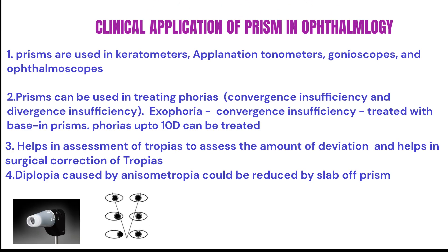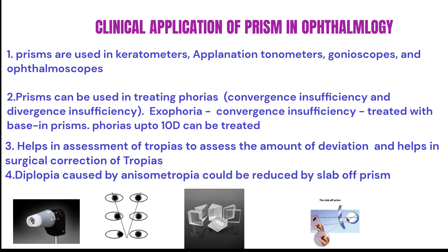Clinical Applications of Prisms: Prisms are used for diagnostic purposes, including in keratometers, applanation tonometers, gonioscopes, and ophthalmoscopes. Prisms can be used in treating phorias such as convergence insufficiency and divergence insufficiency. Exophoria, seen in convergence insufficiency, is treated with base out prisms. Esophoria, seen in divergence insufficiency, is treated with base in prisms. Phorias can be treated up to 10 prism diopters; beyond that, surgical correction is indicated. Prisms are also used in measurement of tropias and for assessing primary and secondary deviation. In incomitant strabismus, prisms are used to correct head posture and reduce diplopia in primary gaze.